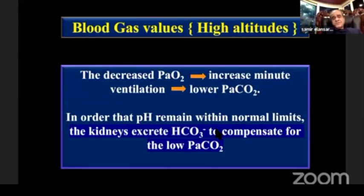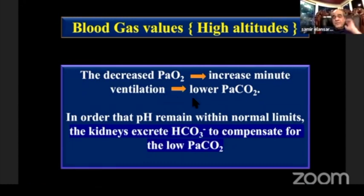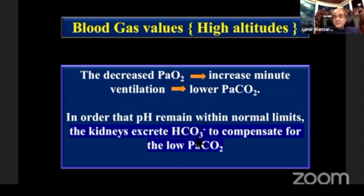You must know that patients living at sea level differ from those living at high altitude. At high altitude, CO2 will be low because there is stimulation of the chemoreceptors by low oxygen, causing tachypnea, increased minute volume, CO2 will drop, and HCO3 in the ABG will also be low to compensate for the respiratory alkalosis.